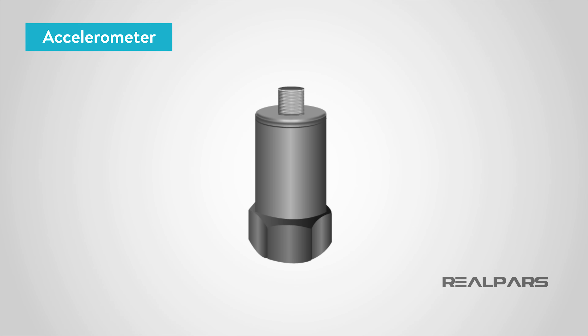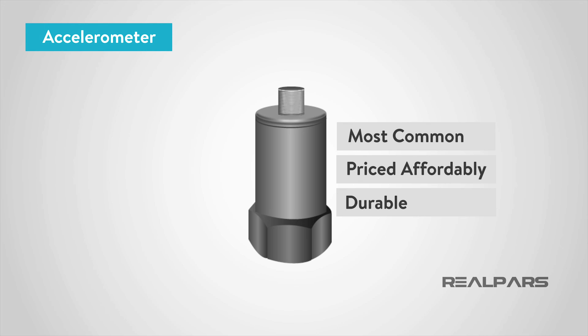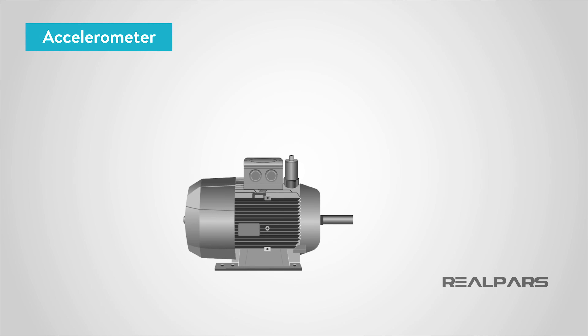Out of the three sensors discussed, the accelerometer is the most common because it has a good range of frequency, meaning it can sense slow and fast applications. Along with the frequency range, accelerometers are priced affordably and are durable. They do have to be mounted directly to the machine, which is common for vibration sensors.